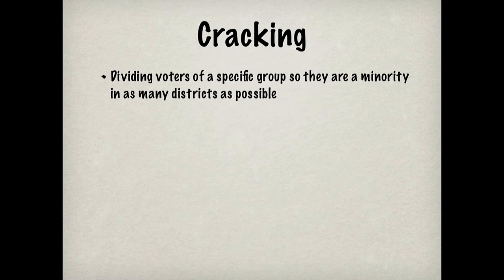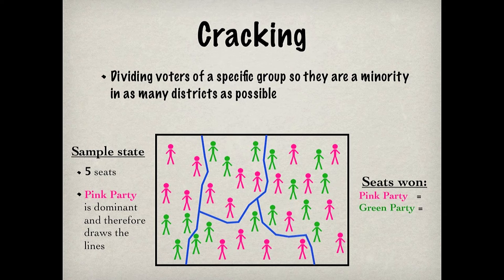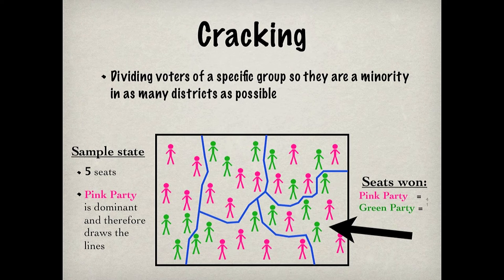Cracking refers to dividing voters of a specific group so they are a minority in as many districts as possible. When the Pink Party divides the Green Party voters among the five districts, like this, the Green Party gets a majority in only one district. Consequently, the Pink Party wins four out of the five districts.